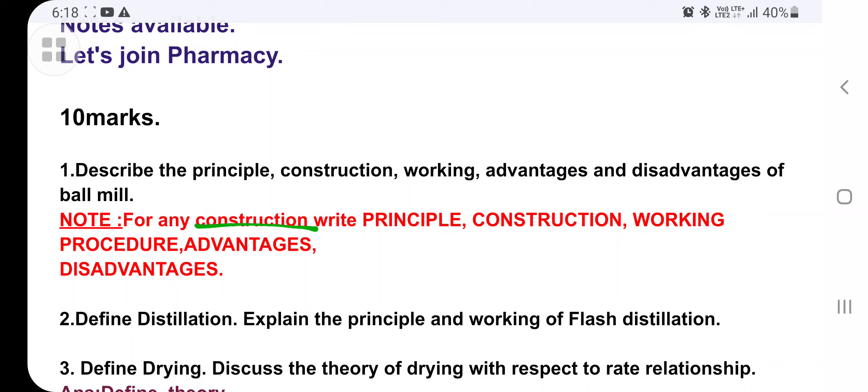Principle - in the name itself it is indicating. For ball mill, size reduction is there. How does size reduction happen? By crushing. The principle should be in elaborated way, means you can write in five to seven lines or ten lines.